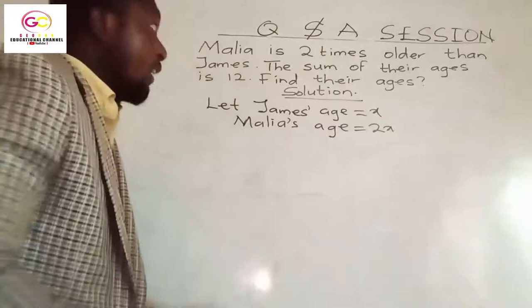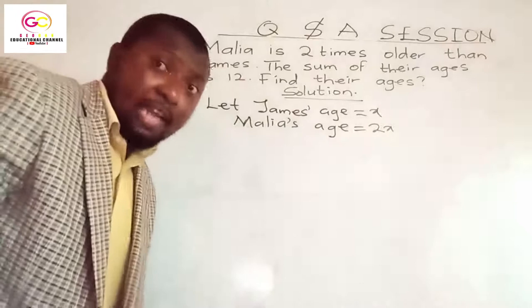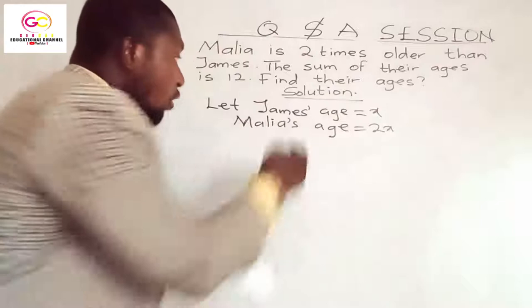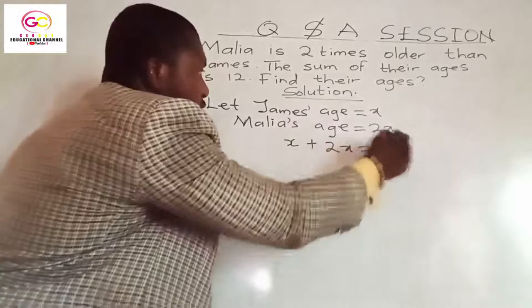The question went on to say that the sum of their ages is 12. And in mathematics, when we say sum it means addition. What it means is that X plus 2X — which are their ages — when you add them together, it should be equal to 12. So X plus 2X should be equal to 12.